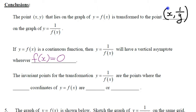The invariant points for the transformation are the points where the y-coordinates of y = f(x) are 1 or negative 1. So when the y value is 1 or negative 1 on the original function, the reciprocal will also be 1 or negative 1.